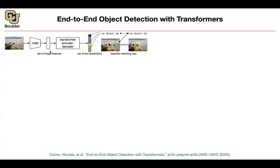We also saw some attempts at replacing CNNs with transformers when it came to dense prediction tasks like semantic segmentation. But we are not letting go of CNNs altogether. There is going to be some CNN giving us at least reducing the resolution that we are going to work with and featurizing it to some extent. And then we are going to put on top of a CNN a transformer encoder-decoder architecture.